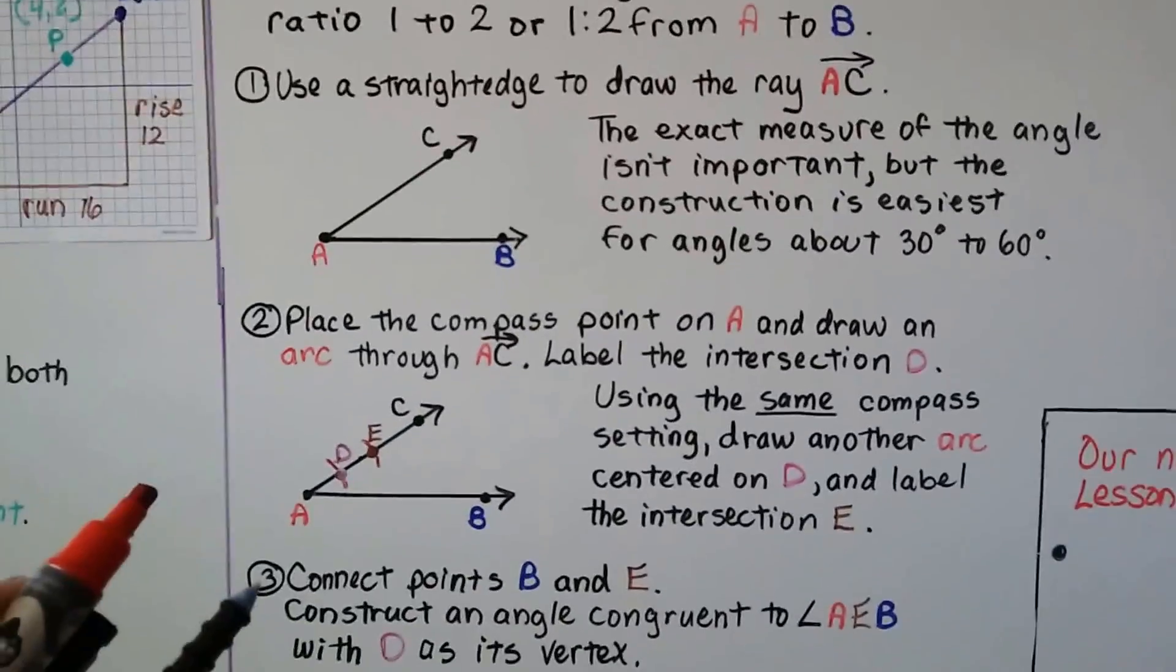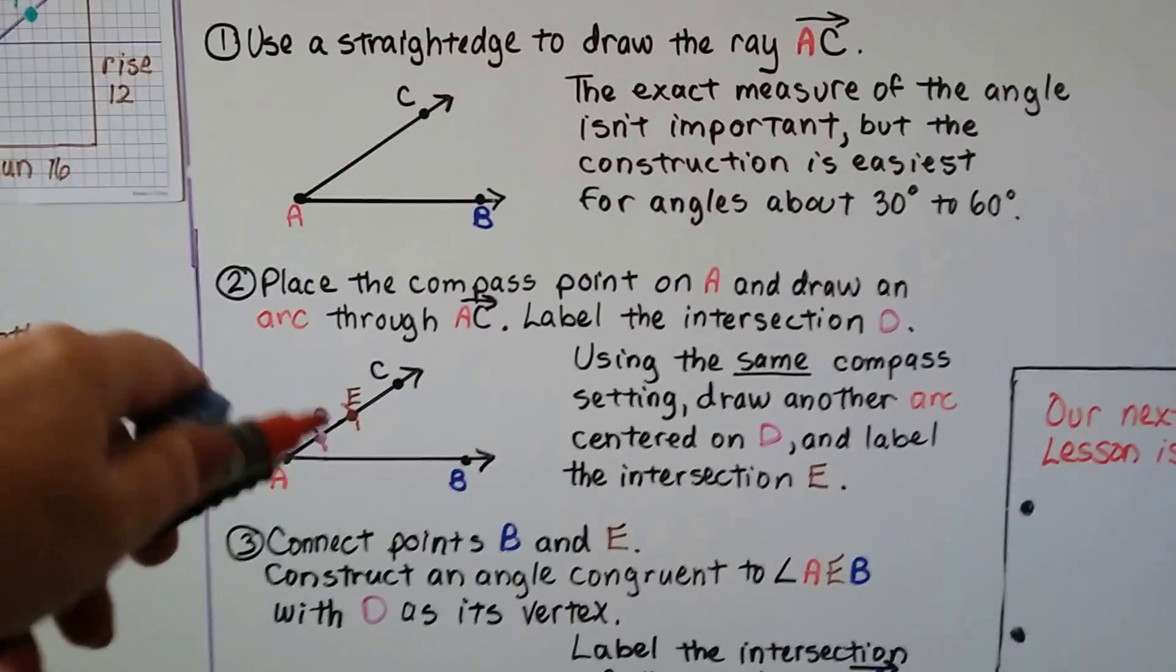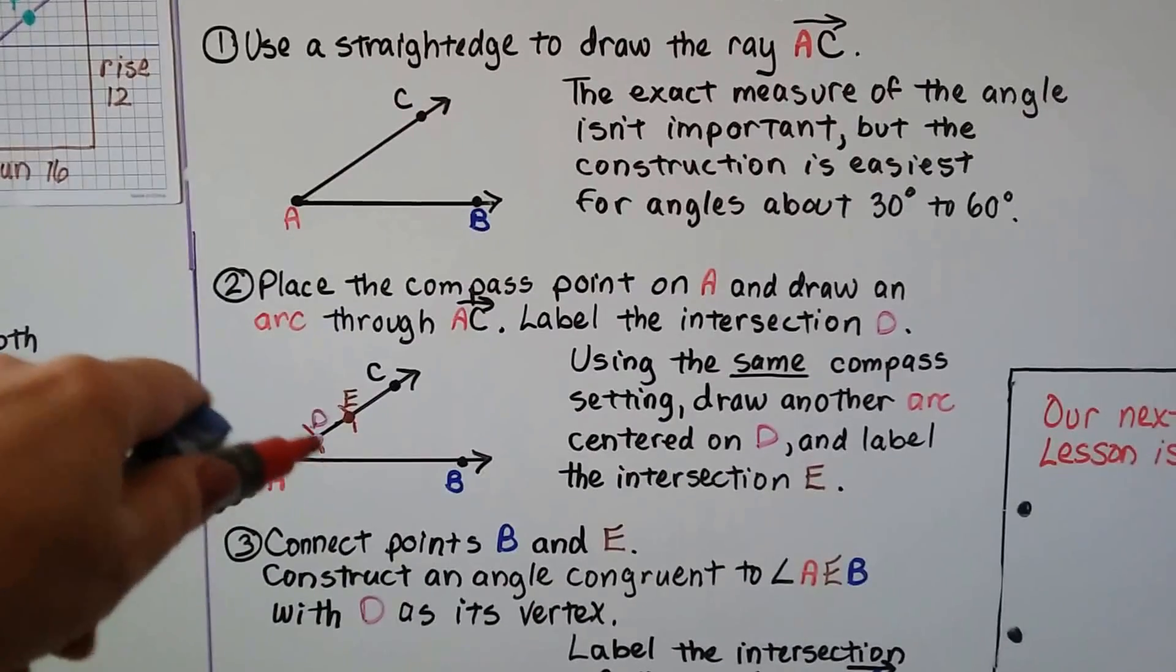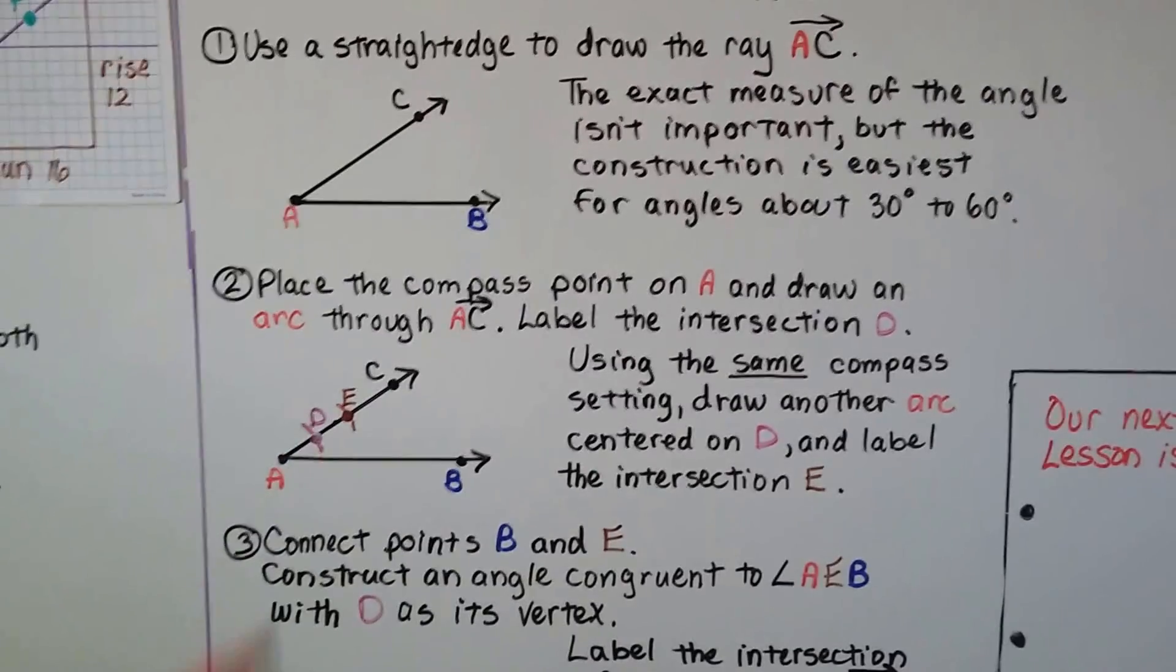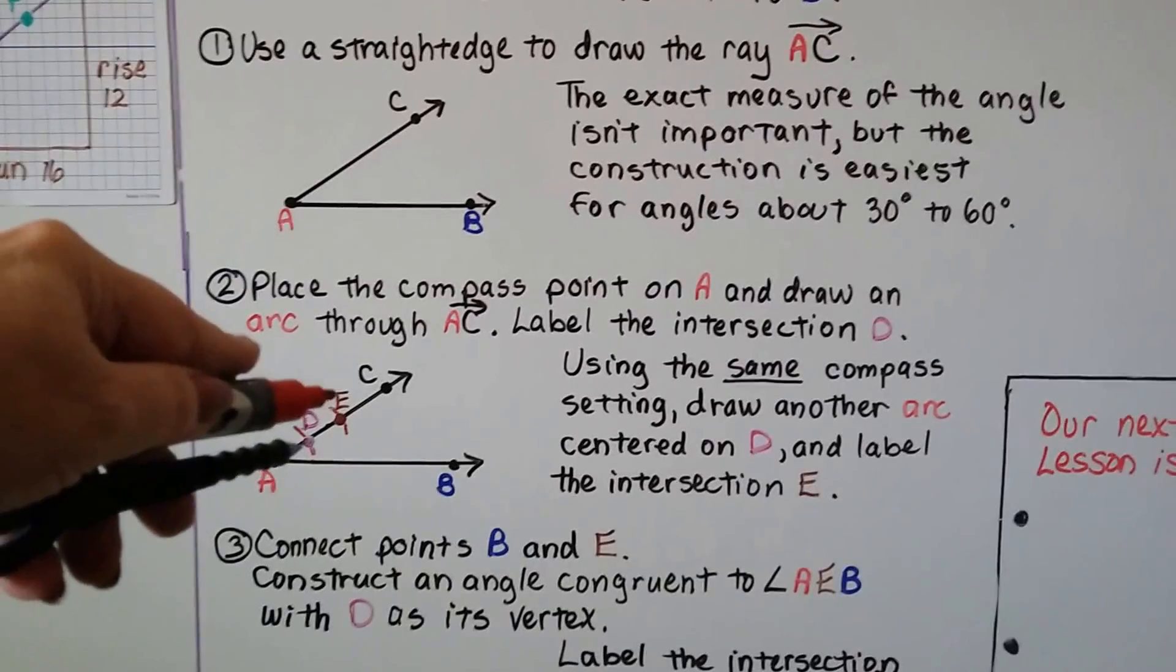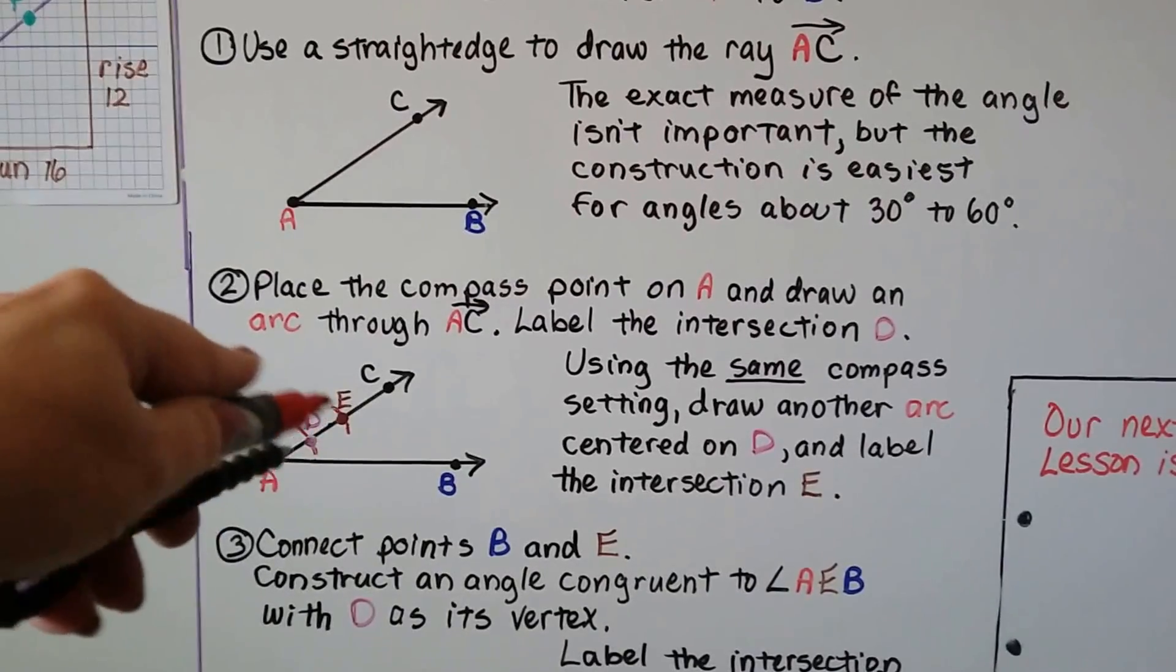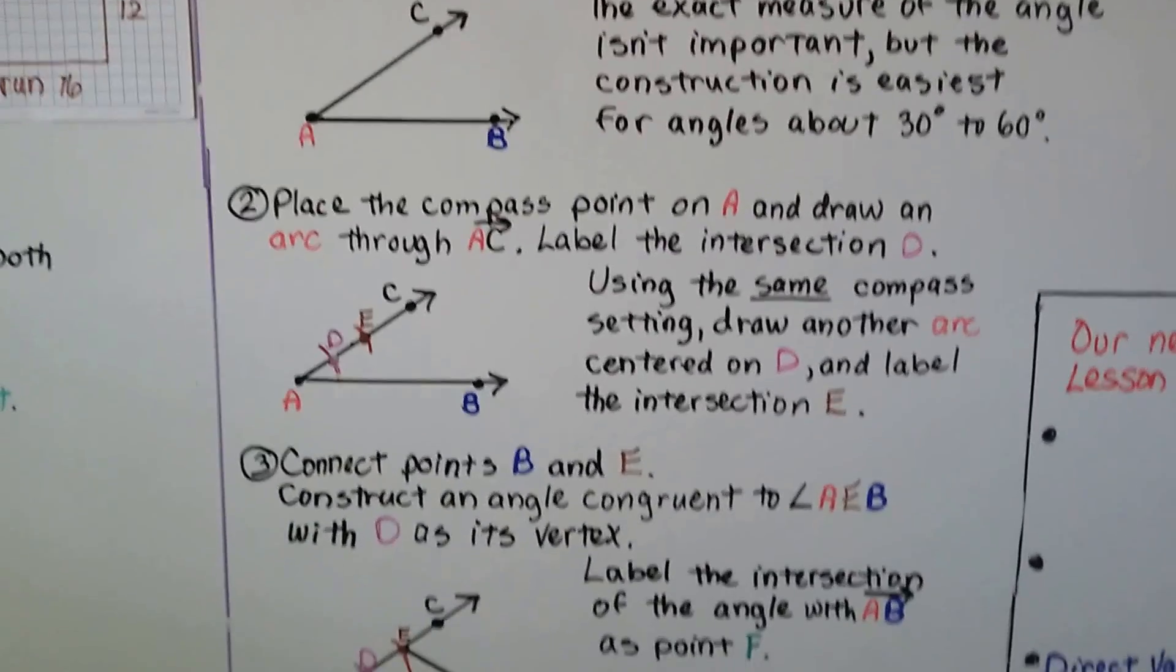We place the compass point on A and draw an arc through ray AC and label the intersection D. Then, using the same compass measure, we set it on D and make another arc, and we mark that as E.